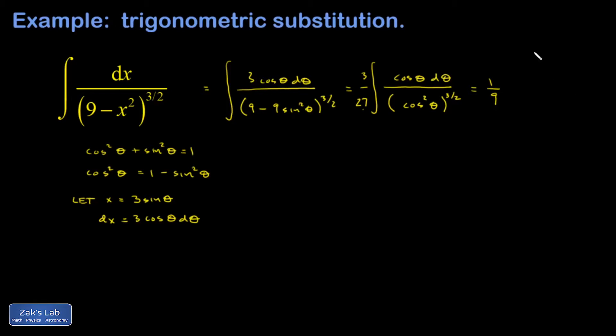Simplifying the constants out in front, that's 1 over 9. And I have the integral cosine theta d theta over cosine squared to the 3 halves. So you square root it and that gives you a cosine function and then you cube it. So I have cosine cubed theta. I'm going to cancel one factor of cosine. That leaves me with cosine squared in the denominator.